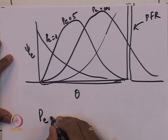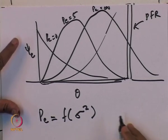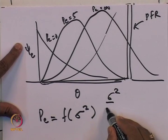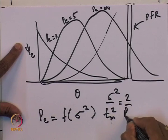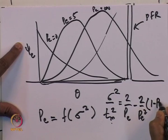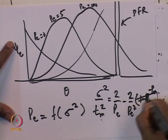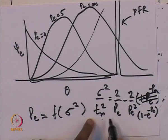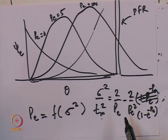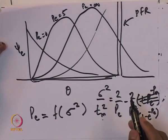The Peclet number is related to the variance: σ²/τ_m² = 2/Pe − (2/Pe²)(1 − e^(−Pe)), where τ_m is the mean residence time. This is for a closed-closed vessel. In the tanks-in-series model I had a relationship between σ and n; here instead of n I have Pe.